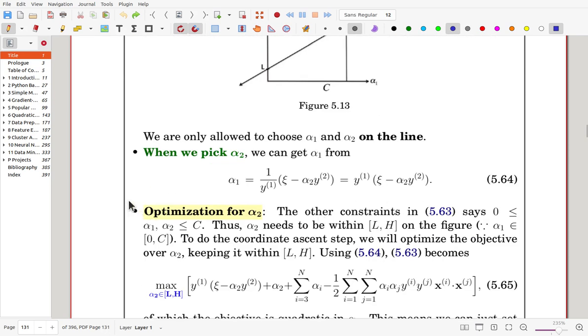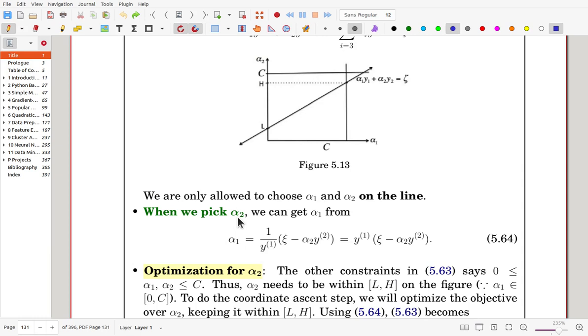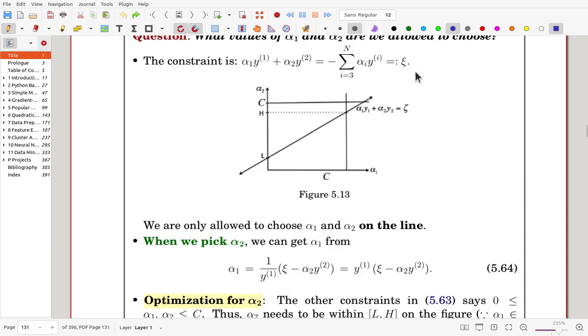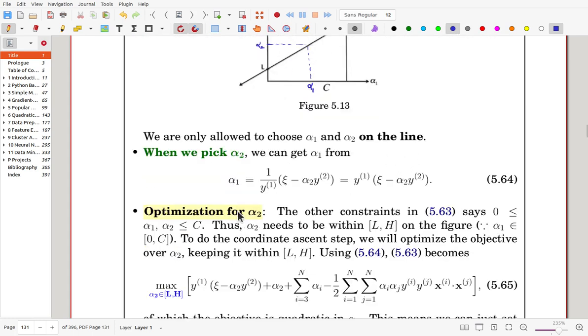Now assume we know alpha 2. We pick alpha 2. Then here now alpha 1 will be decided by using that equation. Here once alpha 2 is known, so let's see alpha 2 is chosen here. There's alpha 2. Then now here alpha 1 must be decided here. There is alpha 1. So we'll focus on the optimization of alpha 2. So once we know how to get alpha 2, then alpha 1 will be automatically decided by using this equation.